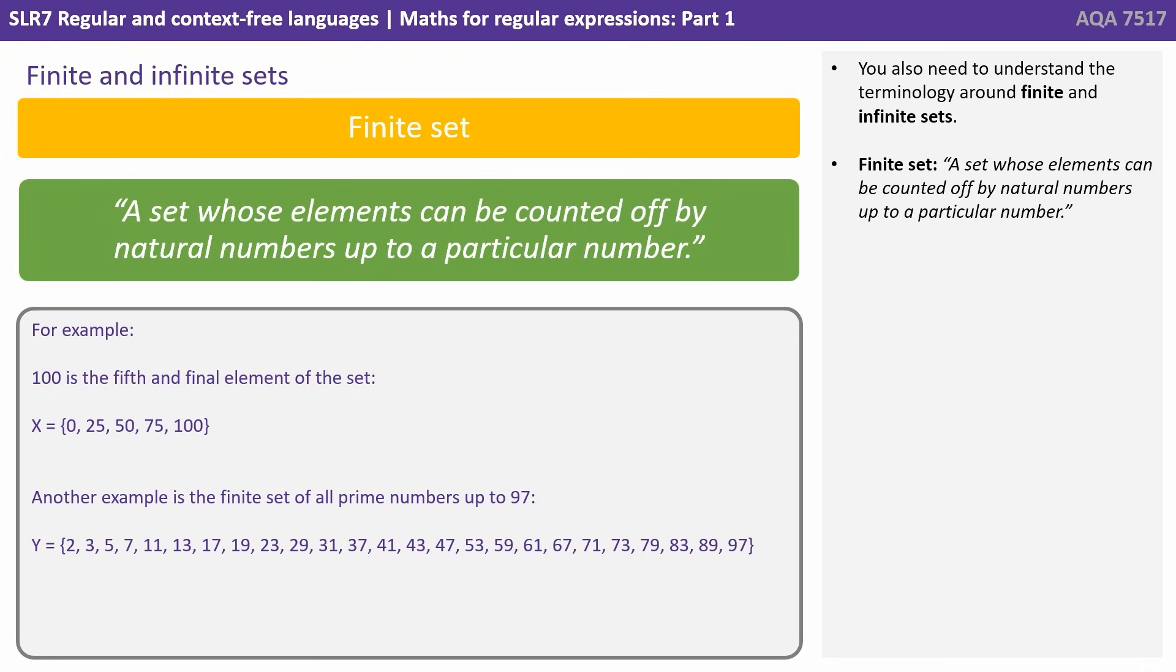You also need to understand the terminology around finite and infinite sets. A finite set is a set whose elements can be counted off by natural numbers up to a particular number. For example, 100 is the fifth and final element of the set X, which we've shown on the screen. Another example is the finite set of all prime numbers up to 97.